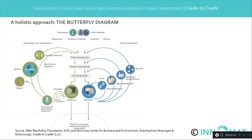The cradle-to-cradle philosophy is about reducing waste to an absolute minimum. A holistic approach is called the butterfly diagram, marketed by the Ellen MacArthur Foundation. The butterfly shows circularity in the biosphere at the left and in the technosphere at the right. In the biosphere, most systems are circular as such, since Mother Nature is circular in the sense of waste is food.